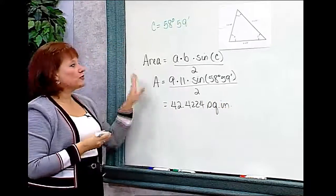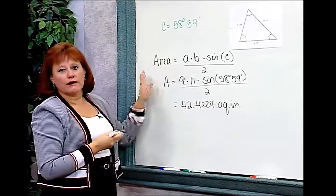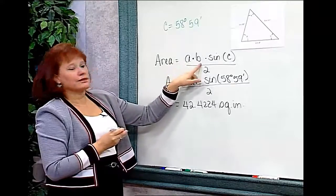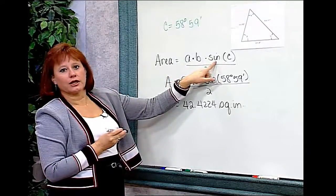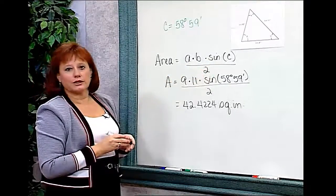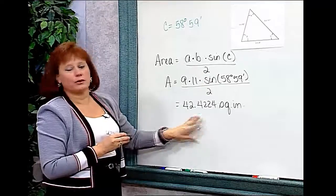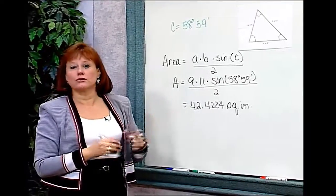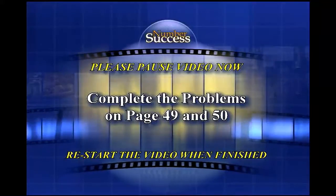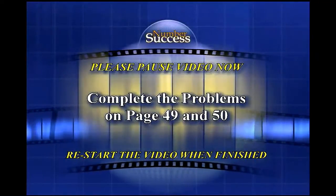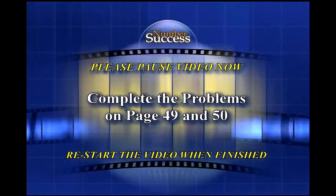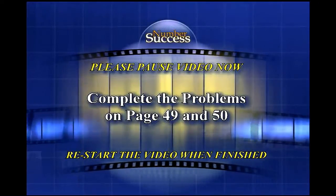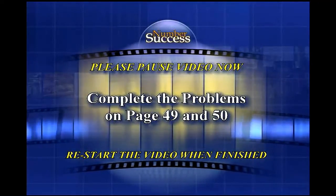This formula will help you find the area of any oblique triangle: multiply two sides together times the sine of the included angle, all divided by 2. That enables you to find the area of any triangle, whether you know the altitude or not. Please pause the video now and complete the problems in your workbook. When finished, press play and we'll continue with the next lesson.